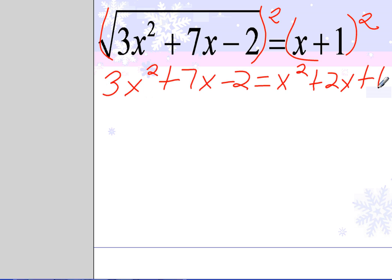This is a quadratic equation. I'm going to move everything to the left to set the equation equal to 0. Moving everything to the left will cause your leading coefficient to be positive. So 3x squared minus 1x squared is 2x squared. 7x minus 2x is 5x. Negative 2 and negative 1 is negative 3.